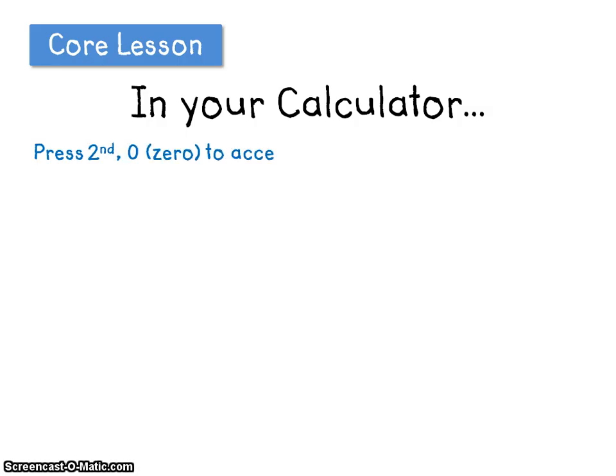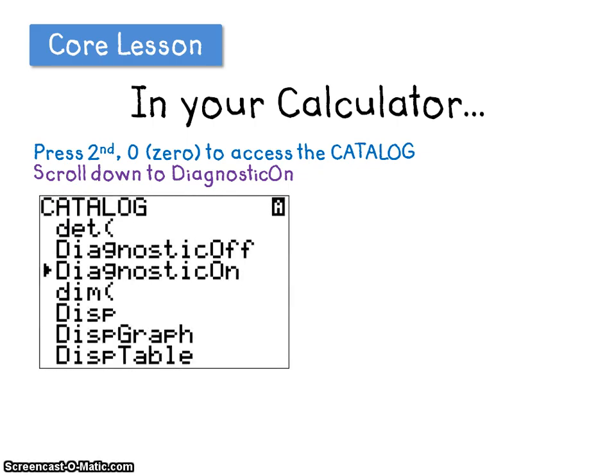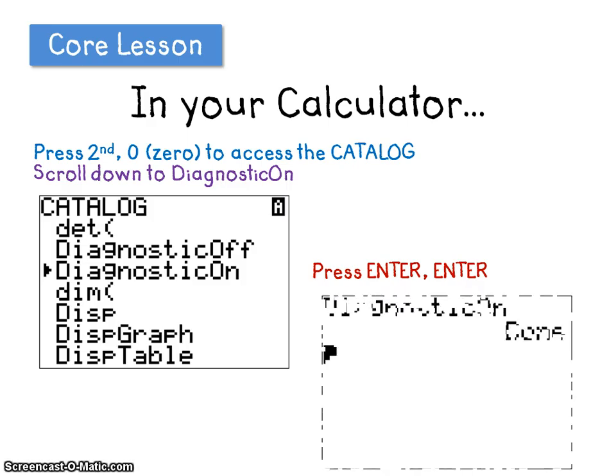So to begin, press 2nd, 0, to access the catalog, and scroll down to Diagnostic On. Your screen should look like this. Once you're there, press Enter, and then Enter again, and your screen should look like this. Once that's done, you don't have to do it again, unless you happen to clear the memory of your calculator. Then you'll have to do it again.